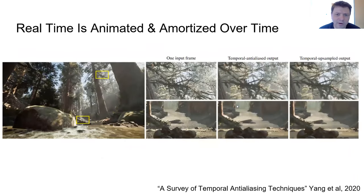So that's all good for single frames, but real-time rendering is animated, and furthermore it's now commonly amortized over time with things like temporal anti-aliasing. And so we really need to think about the temporal axis as well as the spatial.